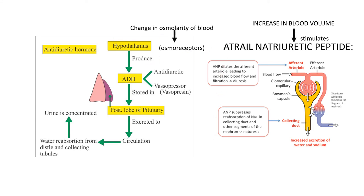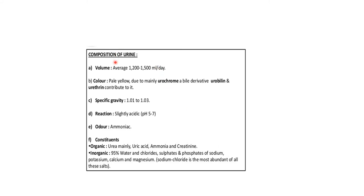The composition of urine: average output is 1200 to 1500 ml per day. Color is pale yellow due to the presence of urochrome. Specific gravity is 1.01 to 1.03. Reaction is slightly acidic with an ammoniacal odor. Organic constituents include mainly urea, uric acid, ammonia, and creatinine. Inorganic constituents: 95% is water; also chlorides, sulfates, and phosphates of sodium, potassium, calcium, and magnesium.